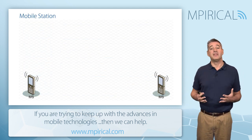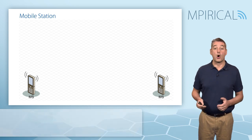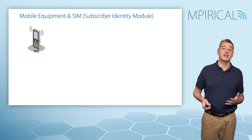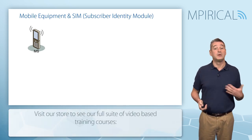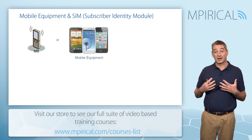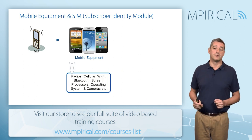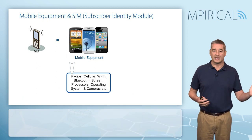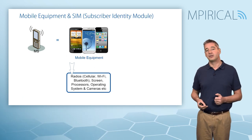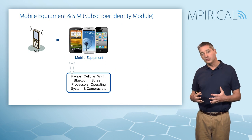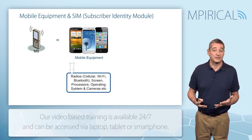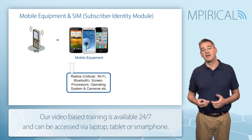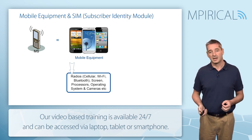Let us begin with the mobile phone, or more accurately the mobile station. The mobile station is made up of two key elements. The first is the mobile equipment — the hardware of the phone — which comprises the various radios such as cellular radio, Wi-Fi, Bluetooth, or NFC, but may also include processors, screen, battery, and cameras.